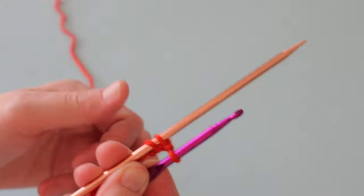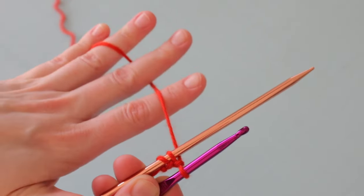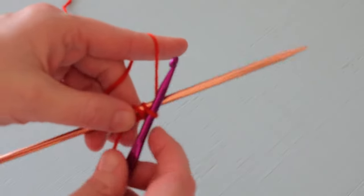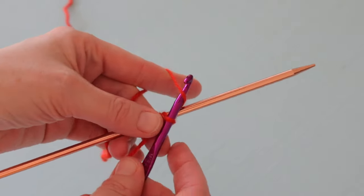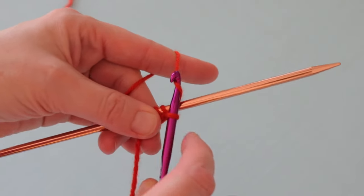So again, bringing the yarn between the hook and the needle and behind the needle, catching the yarn like so, and drawing a loop through the loop on the hook.